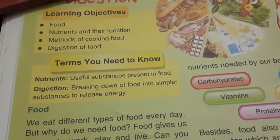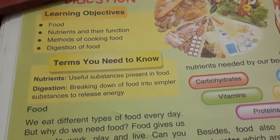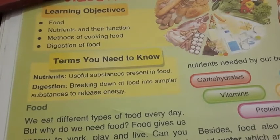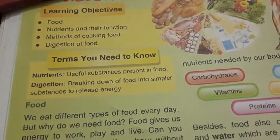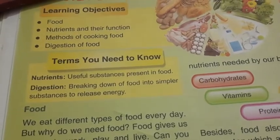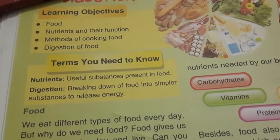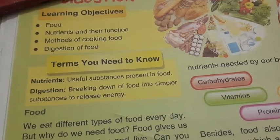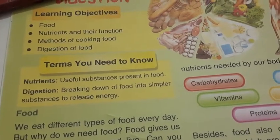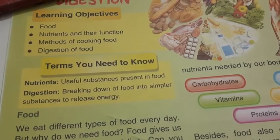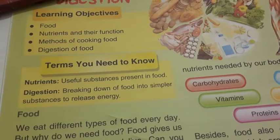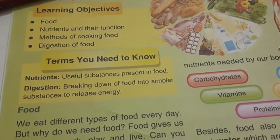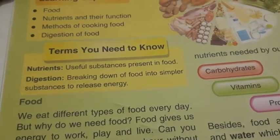What is the definition of nutrients? Useful substances present in the food. The useful substances which are present in our food and which are needed by our body — those useful substances are called nutrients. Some nutrients we need in more amount and some we need in less amount.